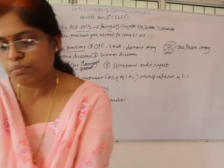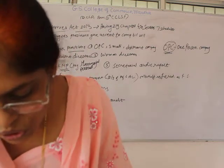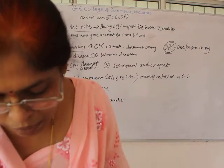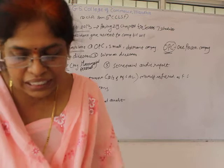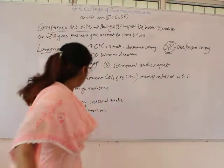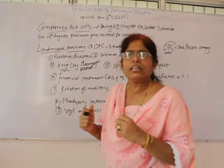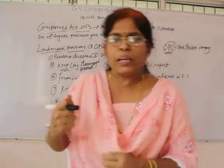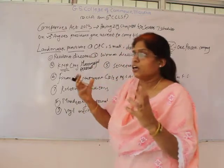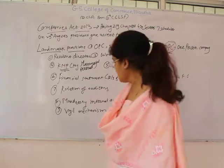Another provision is the vigil mechanism, also known as whistleblowing, which must be established by every listed company and such prescribed class of companies. This provision will help to encourage ethical corporate behavior among the employees of the companies. It is a legal mechanism — if something wrong or illegal is taking place in the company, it is the job of CAs or auditors to alert the business owners so that it can be avoided. This is known as the vigil mechanism.